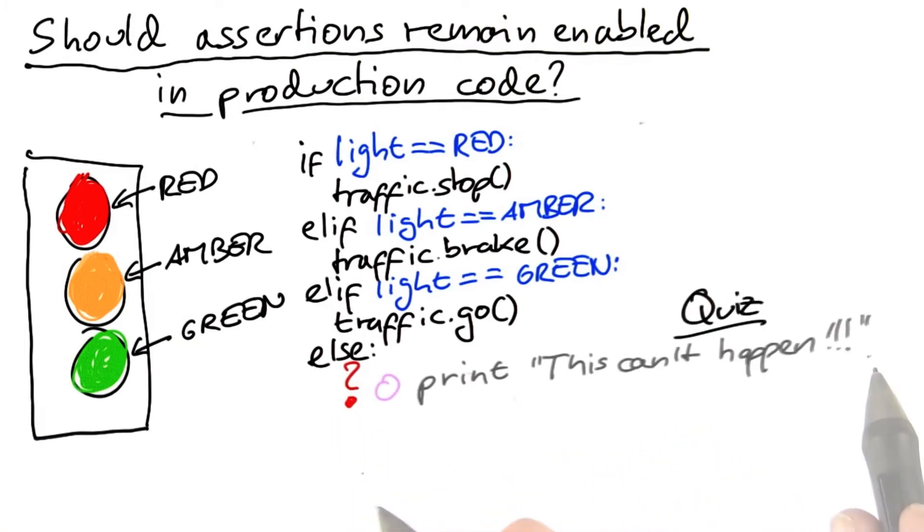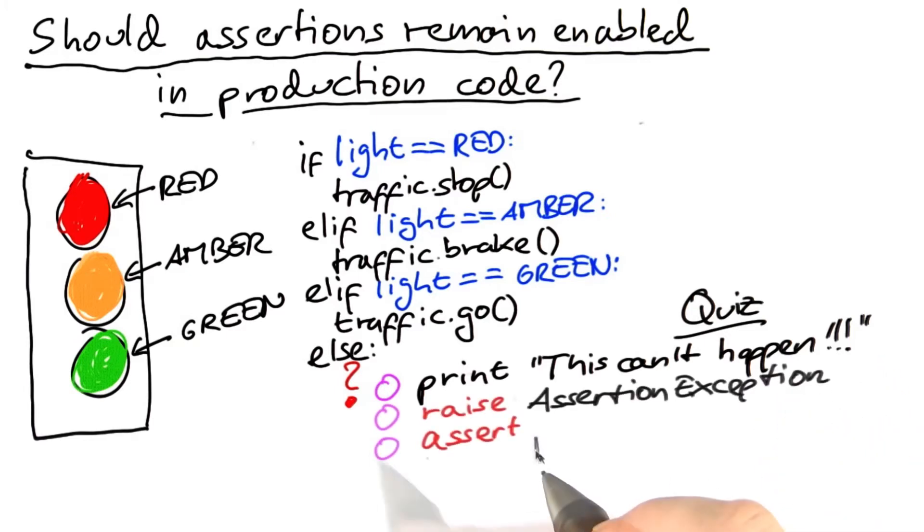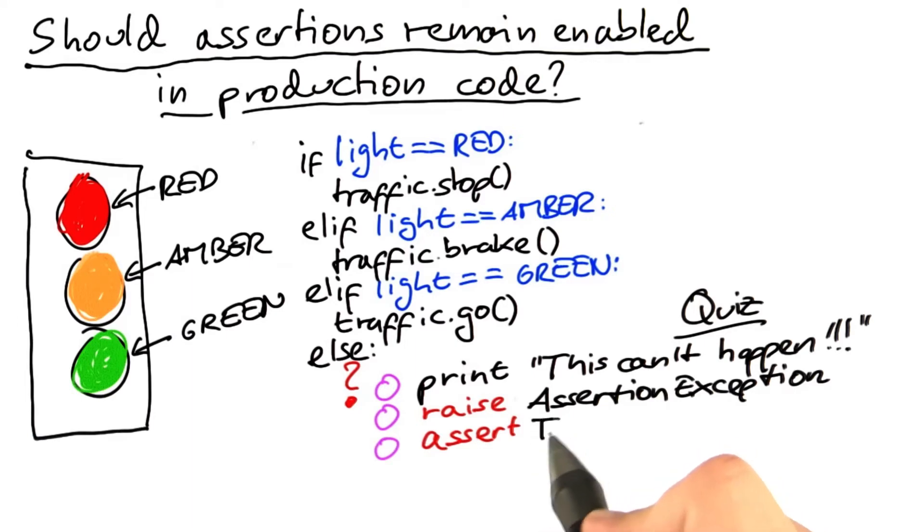I'll give you four choices. First, we print out 'this can't happen' on the console in the hope that somebody will eventually see it. Second, we raise an assertion exception, meaning that the program will immediately abort. Third, we write down assert false, thereby clearly documenting that this is not expected.